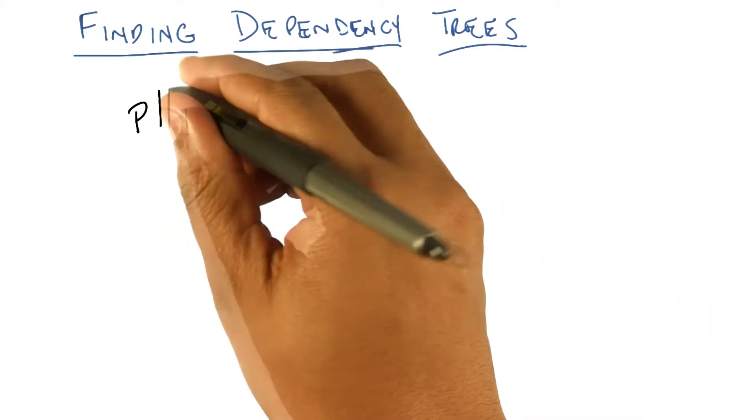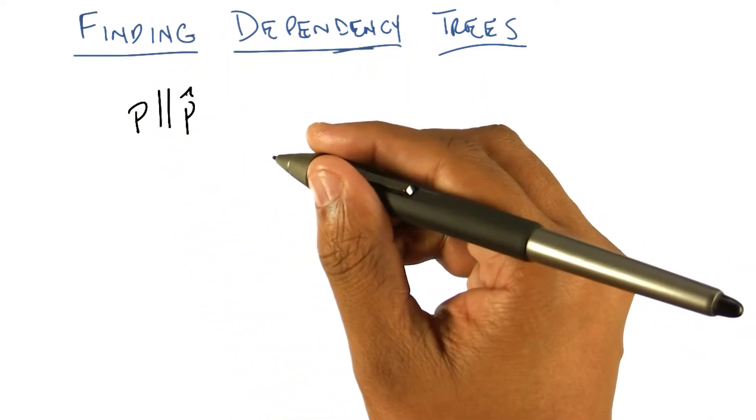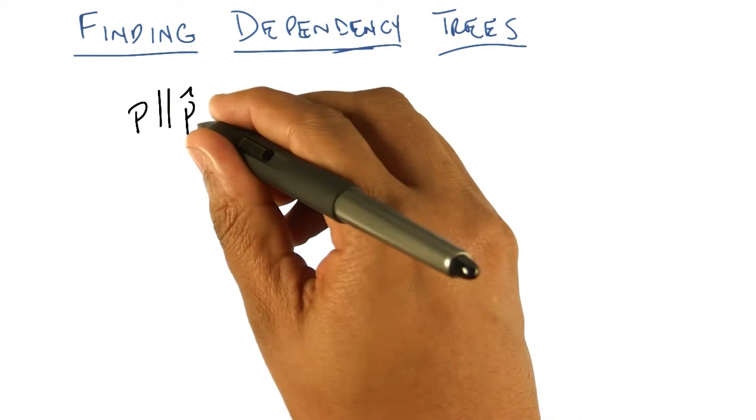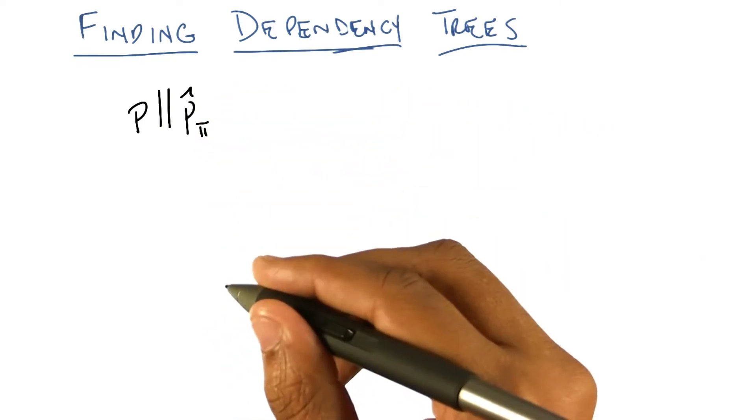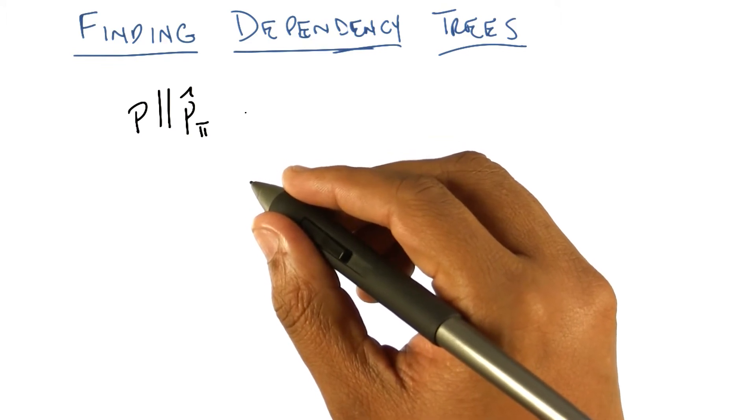And we're going to estimate it with another distribution, which I'm going to represent as P hat because, you know, for approximation, that's going to depend upon that parent function that we defined before, okay?